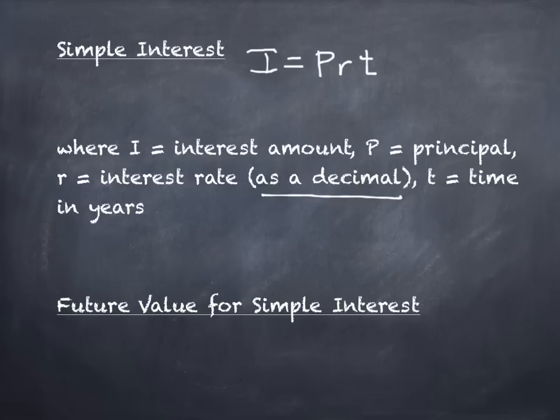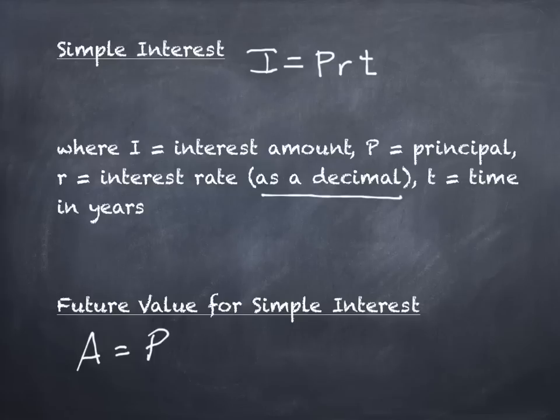There's another formula: the future value for simple interest. A is the amount you have after however many years — it's the value at the end. If P is the value at the beginning, A is the value at the end. You take the principal P and multiply by the quantity 1 plus RT.